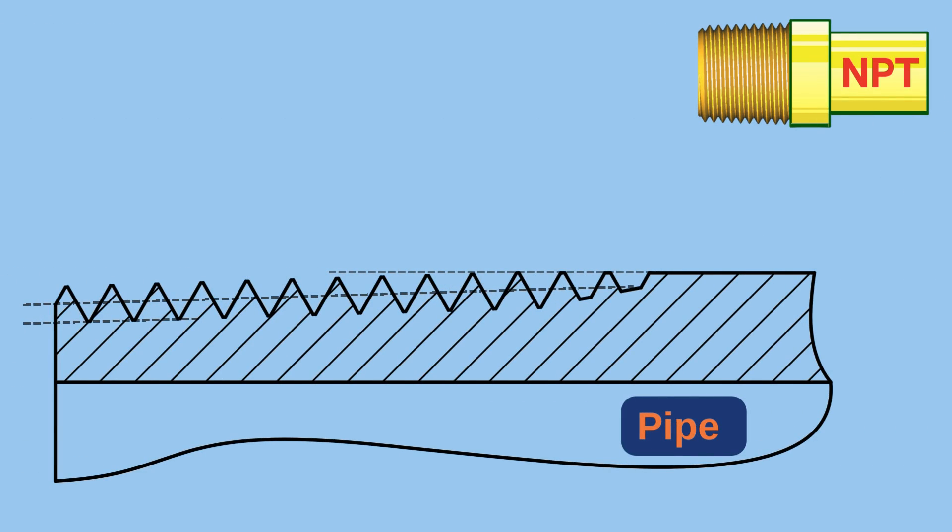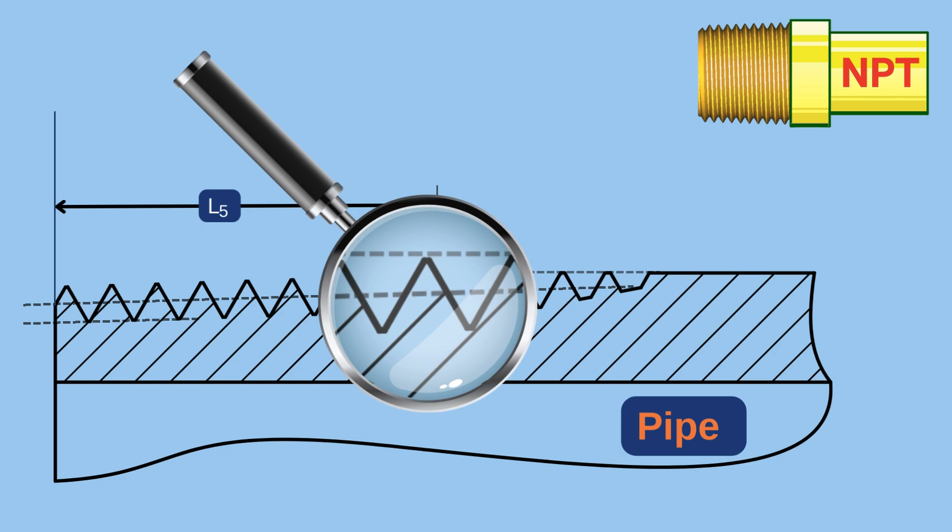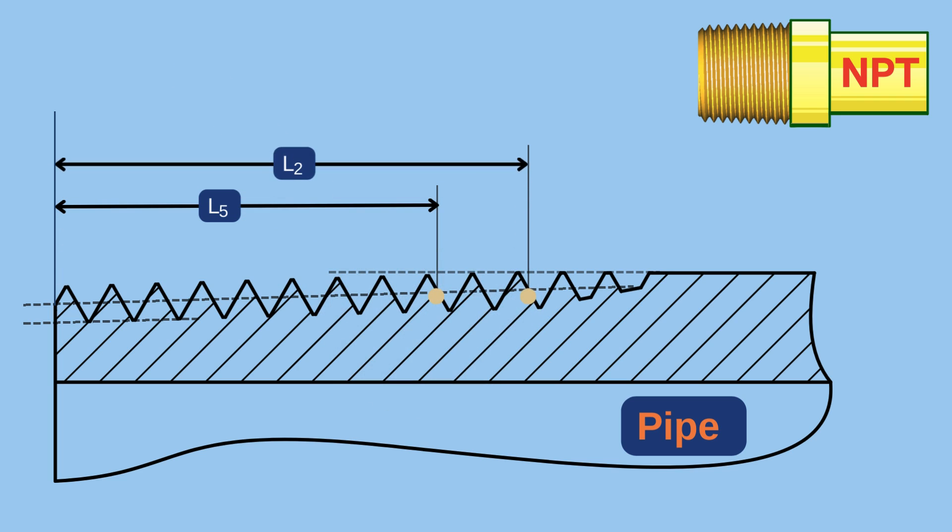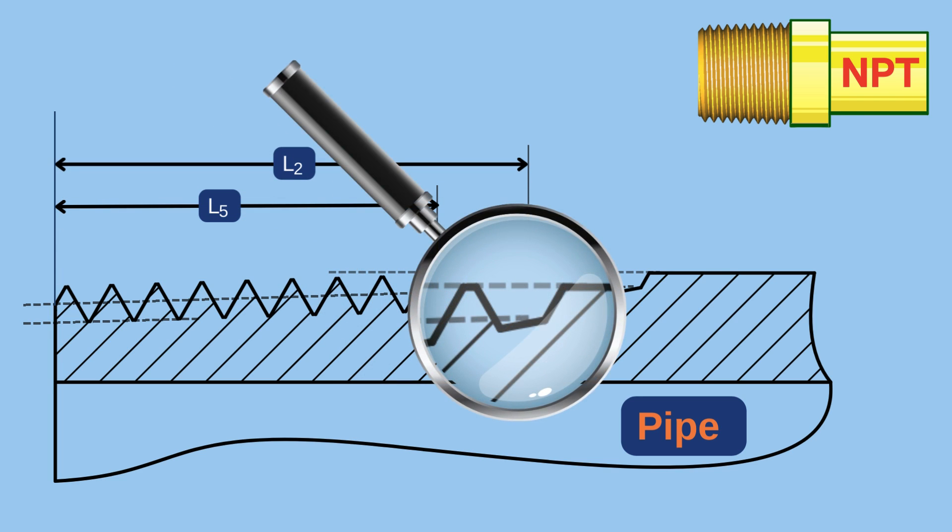The length of the external thread is defined in three stages. L5 is the length of the last complete thread. It is where the cone of the major diameter intersects the outside diameter of the pipe. From this point onward, the thread profile is not complete. L2 is the length of the last useful thread. This is where the thread profile starts to get truncated, but it is still considered useful until this point.